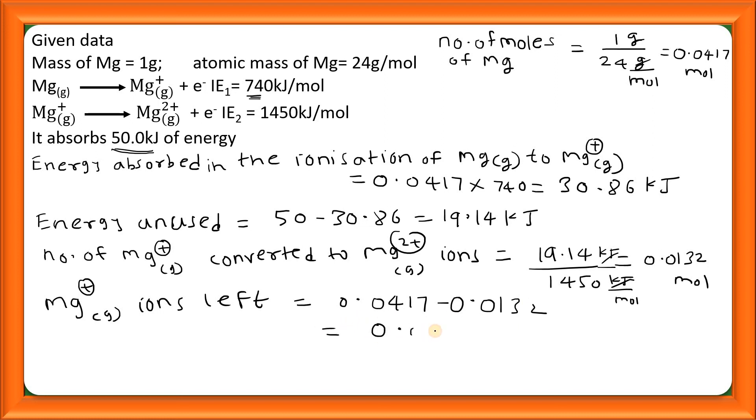Now we can write percentage of Mg⁺ ions: number of Mg⁺ ions, that is 0.0285, divided by total ions, the total ions is 0.0417 moles, into 100. So this comes out to be 68.35 percent.